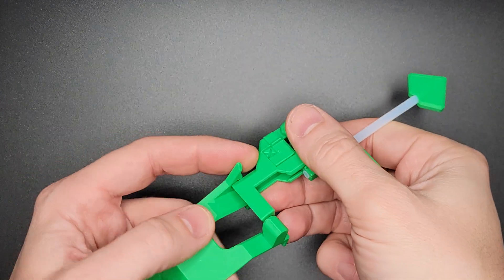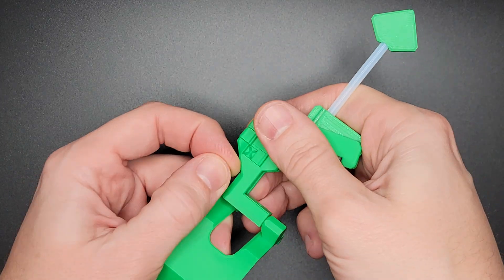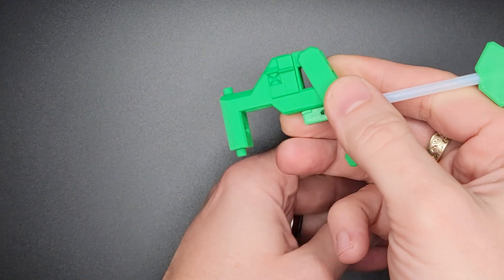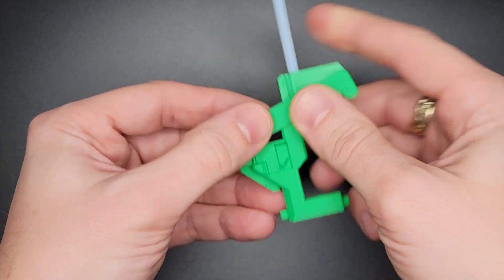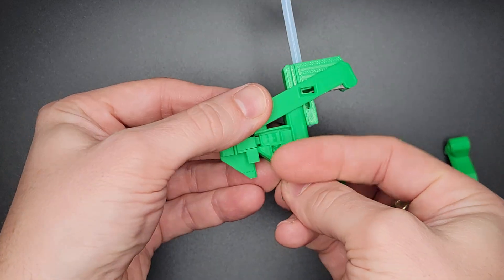To disassemble, just pull back on this here and lift and that comes off. The lock, just get a fingernail under there.